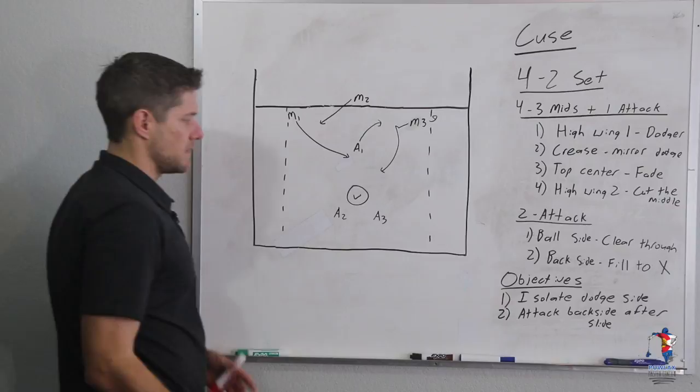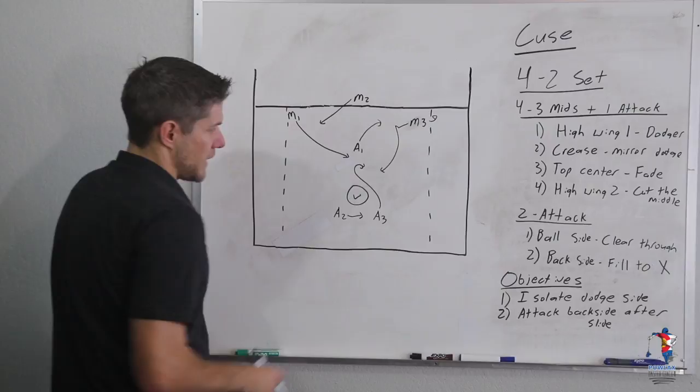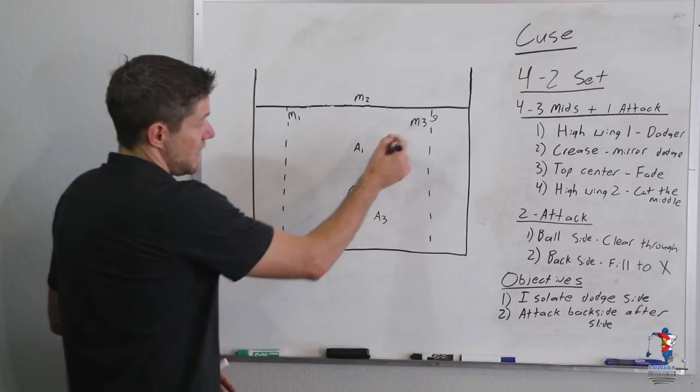Next, we're going to talk about the rules for our two attackmen. It's basically very simple. Whoever's ball side is going to clear through and fish hook, or as our players like to call it, a candy cane. The other player is going to fill to X to be the forward outlet. The first thing we were looking for within this offense is to completely isolate this dodger.